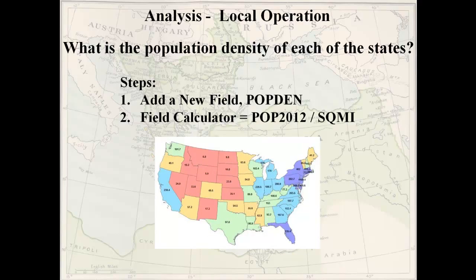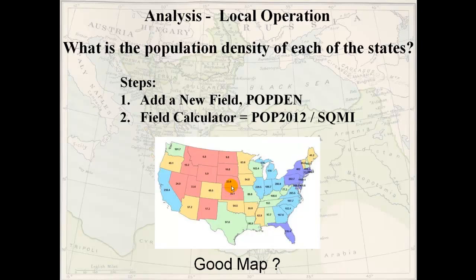Now we have a result for each state — a number representing population density in people per square mile. What do you think about that map? Those paying attention in Module 3 might notice this is numeric data, and numeric data generally shouldn't be symbolized with distinct colors. The values appear to have been classified into five groups with distinct colors assigned to each class. But for numeric data, the best approach is a single color with different levels of intensity — so this is probably not a very good map.